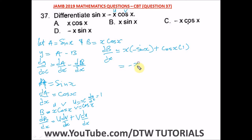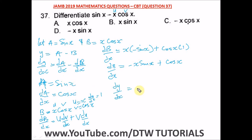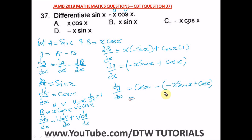db/dx gives us negative x sine x plus cos x. Now let's substitute into dy/dx. dy/dx is equal to da/dx — which is cos x — minus the bracket containing db/dx: minus x sine x plus cos x.